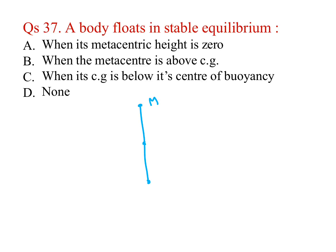MG, BM is metacentric height, G is center of gravity, B is center of buoyancy, so M should be above G. Metacenter is above CG. B is the answer.